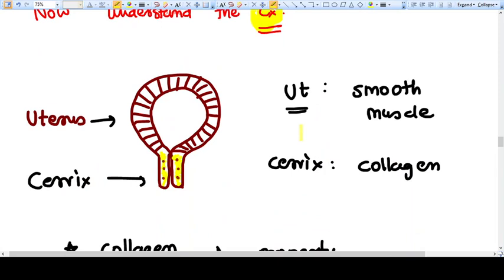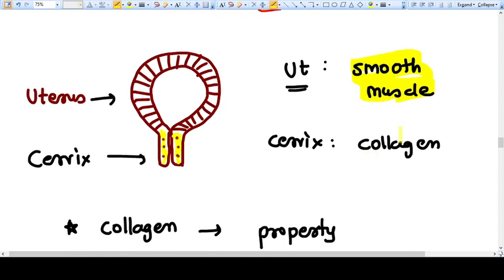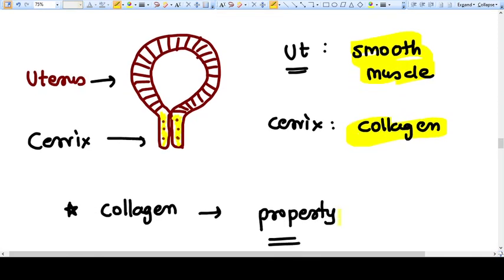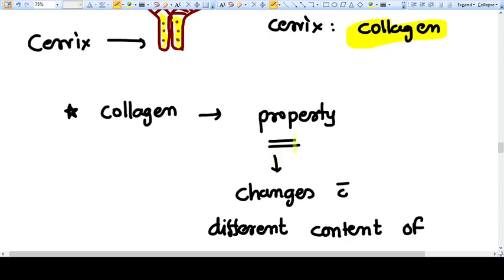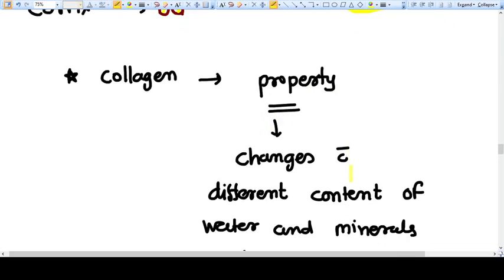Cervix is a part of the uterus obviously, but there is a difference. Uterus is primarily made of smooth muscle, while the cervix is primarily made of collagen. Now, the very important property of collagen in our body is it changes with the different contents of water, mineral, and enzymes.